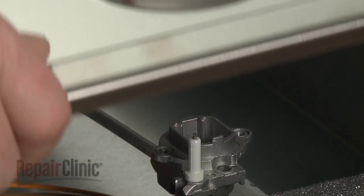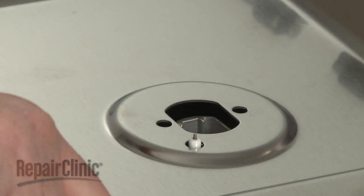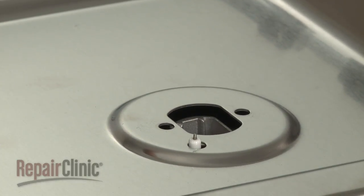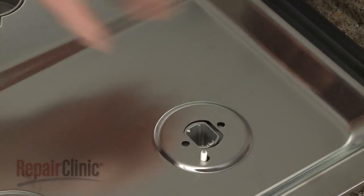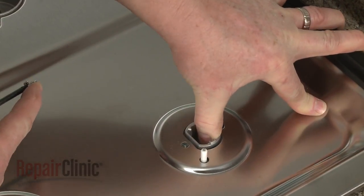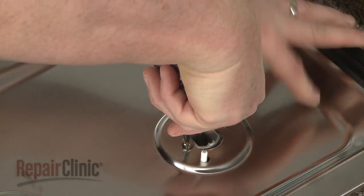Realign the main top on the base so the spark electrodes protrude through the holes in the top. Confirm that the orifice holders are aligned, then thread and tighten the screws to secure the holders to the main top.